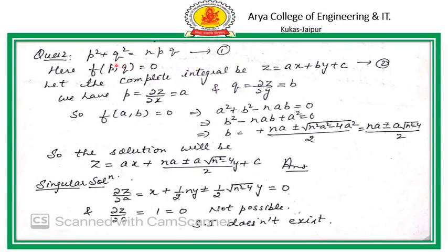Question number 2: the given equation is again in standard form first — the equation contains only the terms of P and Q. So we take the complete integral Z equals AX plus BY plus C, giving P equals A, Q equals B. Substituting A equals P and B equals Q in equation number 1, we get the relation A squared plus B squared minus NAB equals 0. We find one of the constants — here we calculate B equals A.